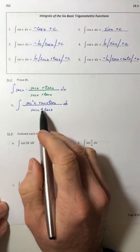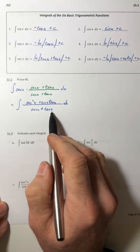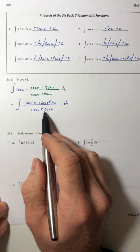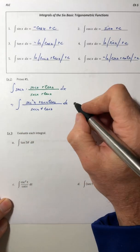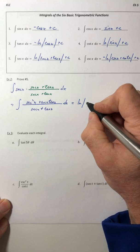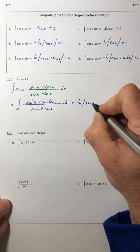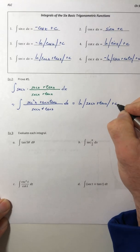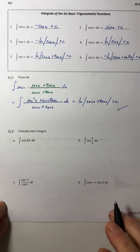And now I have u prime over u. The derivative of secant is secant tangent. The derivative of tangent is secant squared. So I have ln of the absolute value of secant x plus tangent x. And there's your proof.